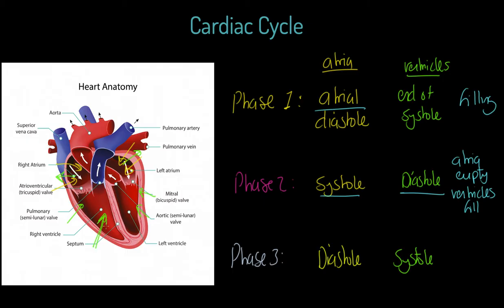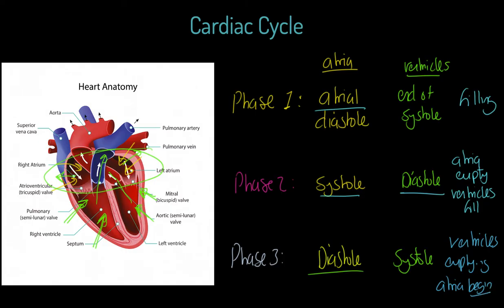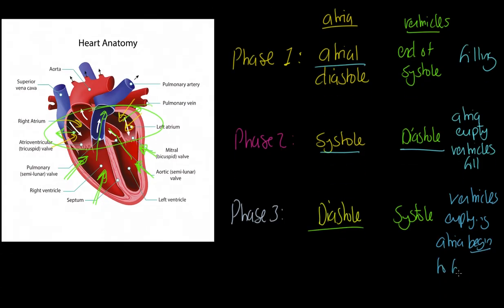The ventricles are squeezing up and outwards, but in order for blood to leave, the atria need to be in their relaxation phase, which is why they're going through diastole. We get the ventricles emptying and the atria begin to fill again.